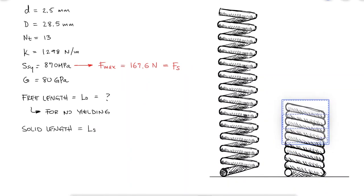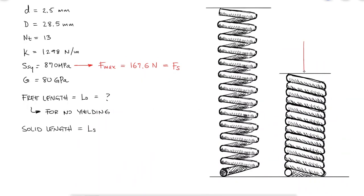When a spring with plane ends like this one is compressed to its solid length, its solid length will be equal to the total number of coils plus 1 times the diameter of the wire.